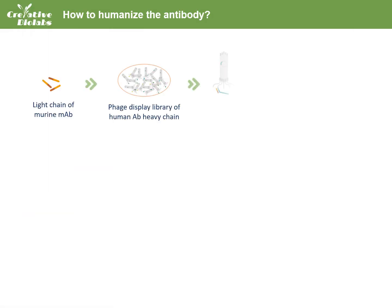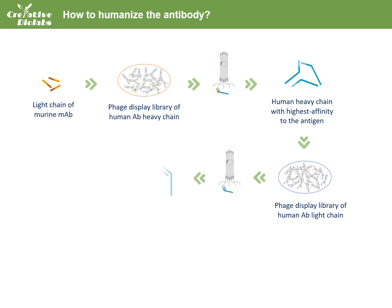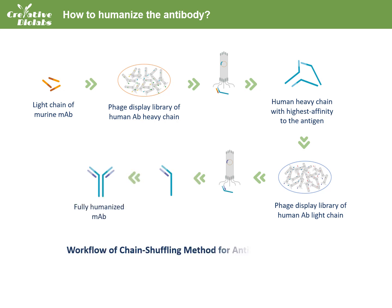The third generation antibody humanization method, referred to as chain shuffling, uses phage antibody library technology to humanize the mouse antibody through the chain replacement of mouse monoclonal antibody FAB fragments, resulting in a fully humanized antibody with 100% human antibody sequence, fundamentally overcoming the emergence of the human anti-mouse antibody response.